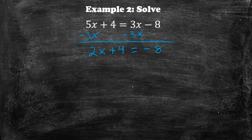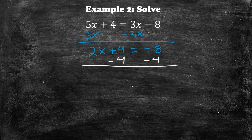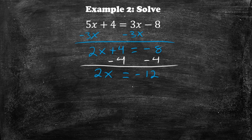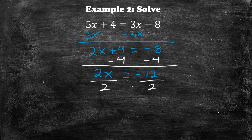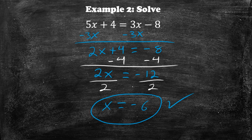Now we want to move the 4 over to the right-hand side. We do that by doing the opposite — you always do the opposite of whatever's in front. So we get 2x is equal to negative 8 minus 4, which is negative 12. The last step is to get x by itself: since it's 2 times x, we divide both sides by 2, giving us x is equal to negative 6. That is our final answer.